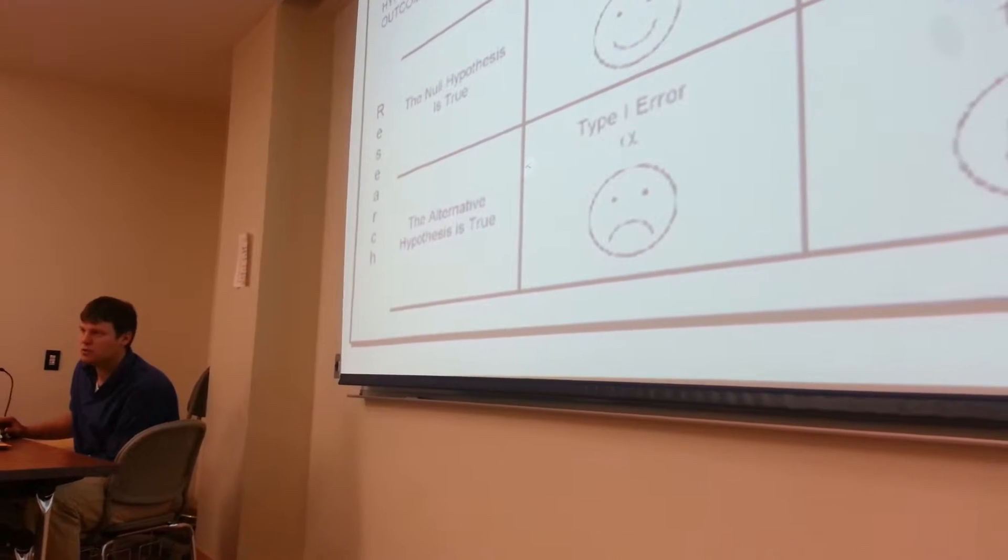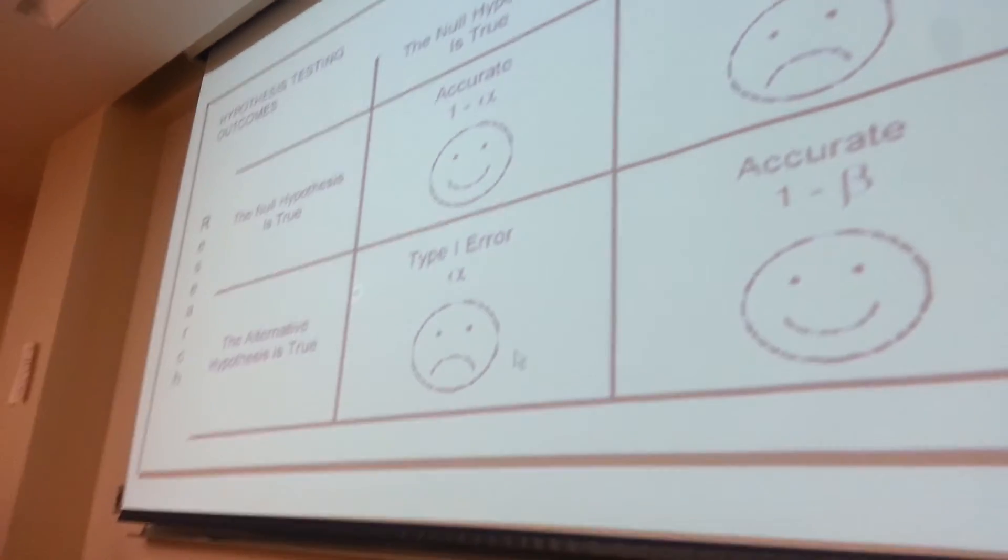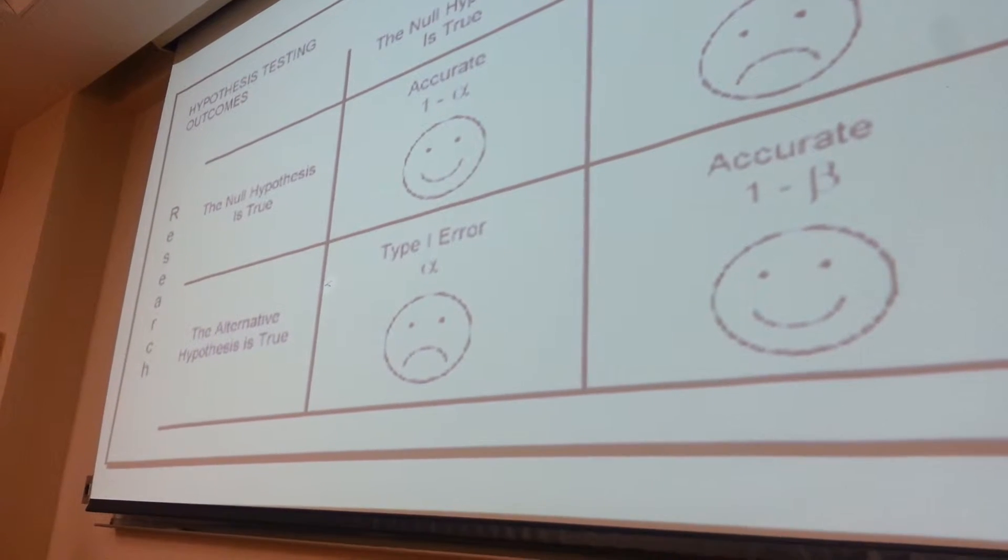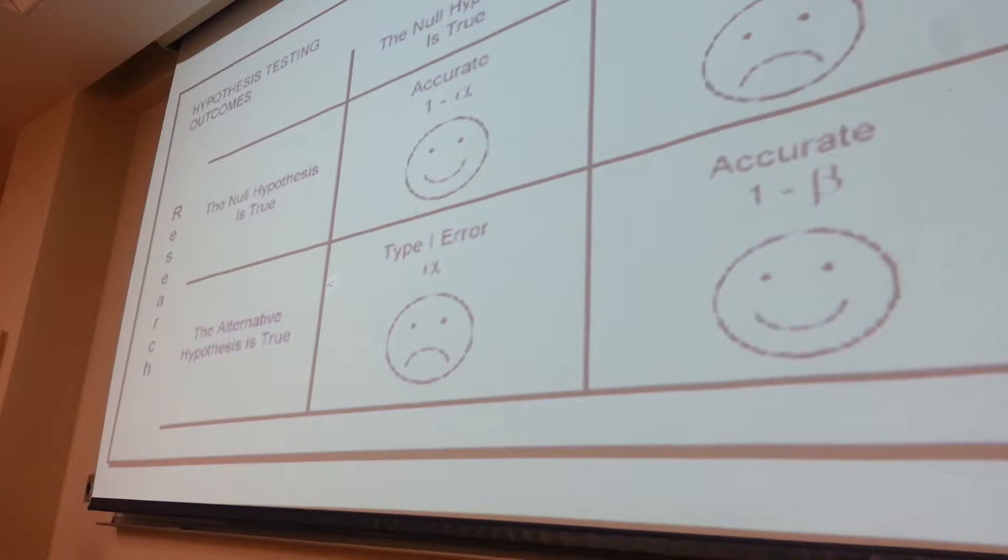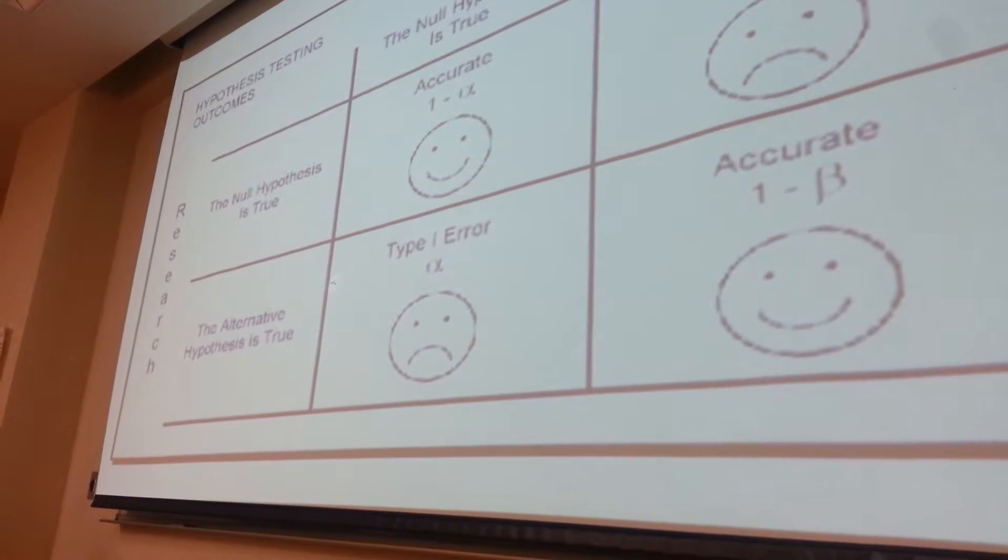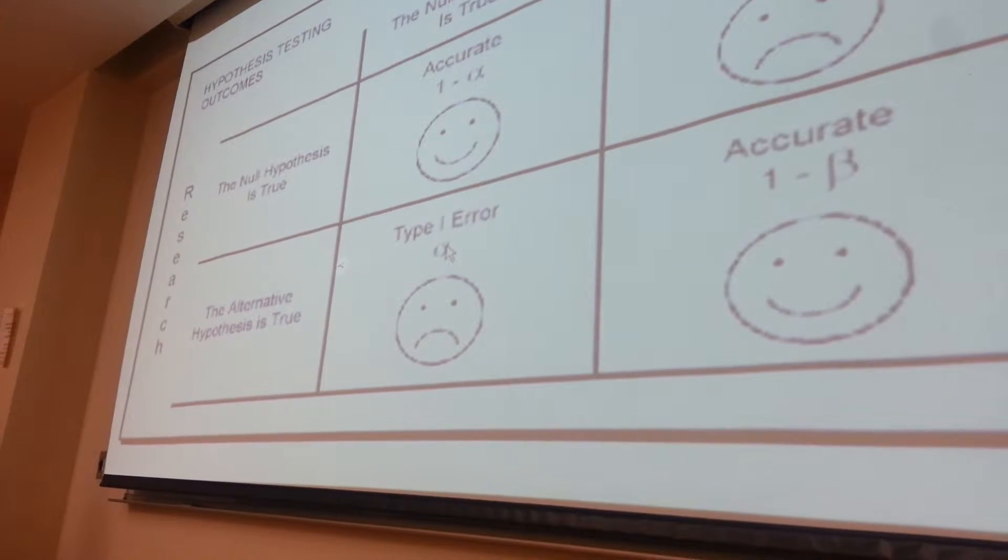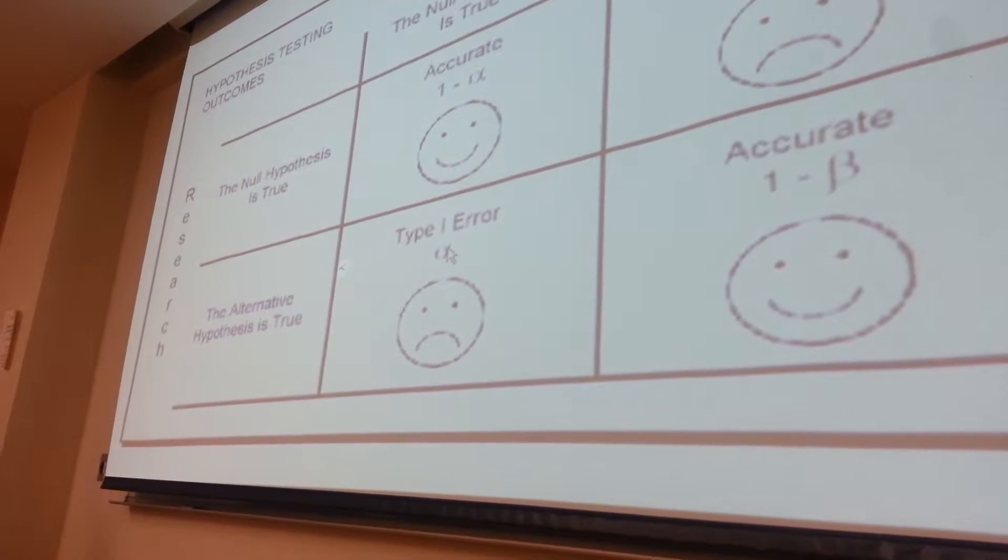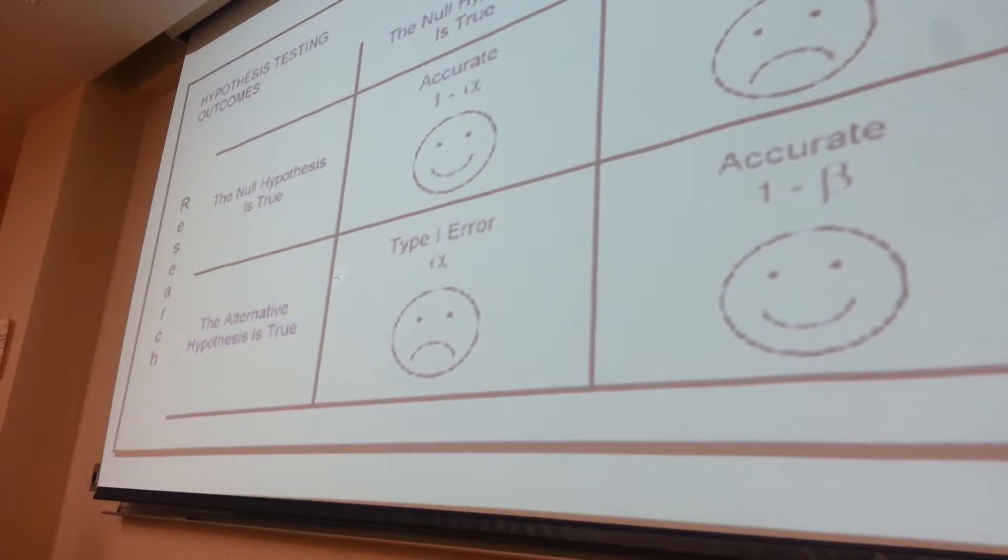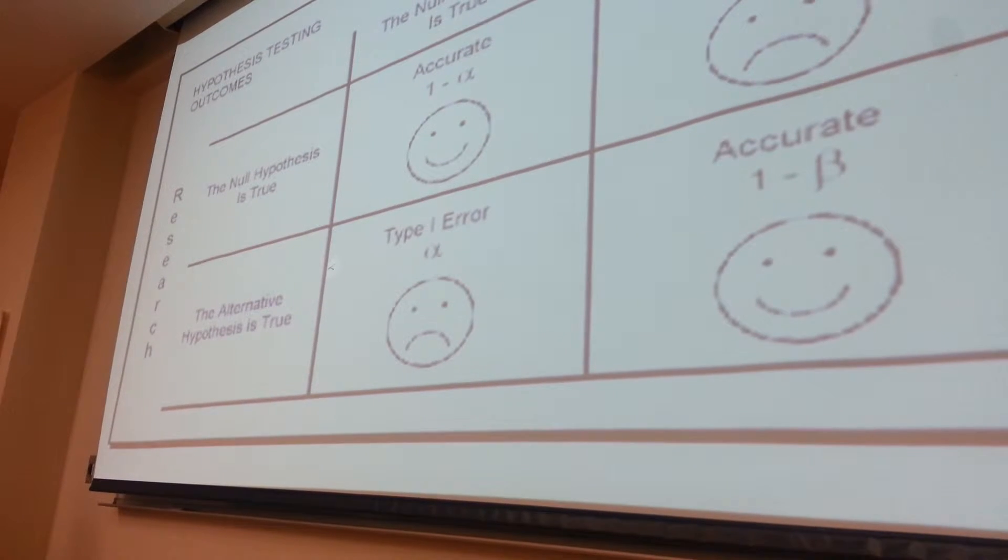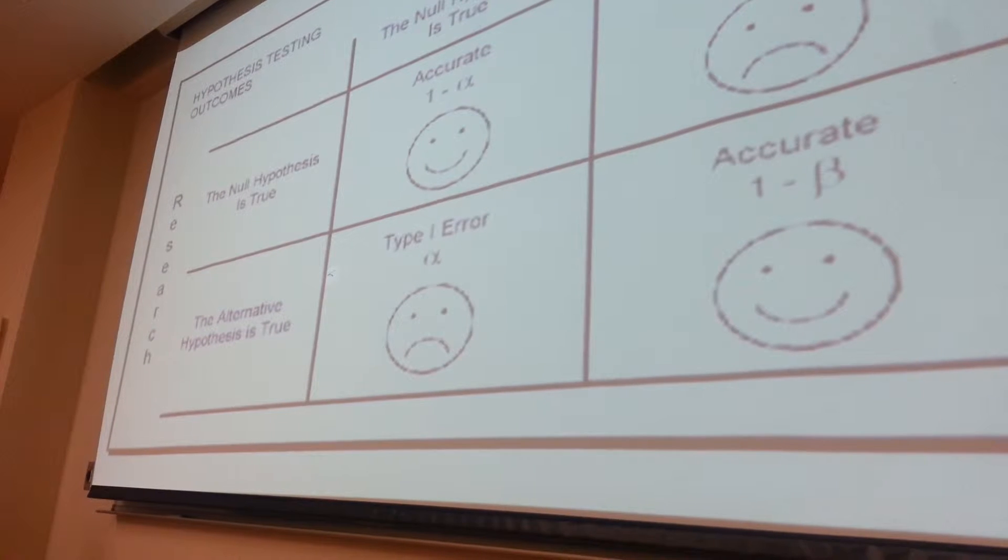But you always have to worry that when you run a study, you could have committed a Type 1 error. Sometimes it's just dumb chance. Sometimes things like demand characteristics or the placebo effect can kind of create these effects in a lab that don't replicate in the real world. And when that happens, you're committing a Type 1 error. When your research says reject the null, reject the null, you found something, but in reality you really didn't. Not that you did something wrong with your statistics, but just something happened in your study that's not allowing it to match up with what's happening outside of the lab, outside of your research.